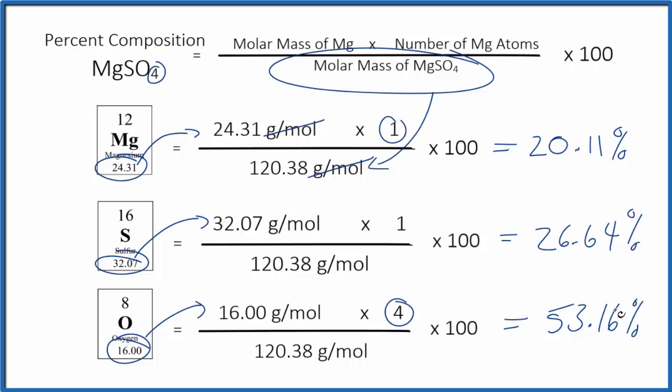If you add all these numbers up, they should be very close to 100. This is Dr. B calculating the percent composition by mass for each element here in MgSO4, magnesium sulfate. Thanks for watching.